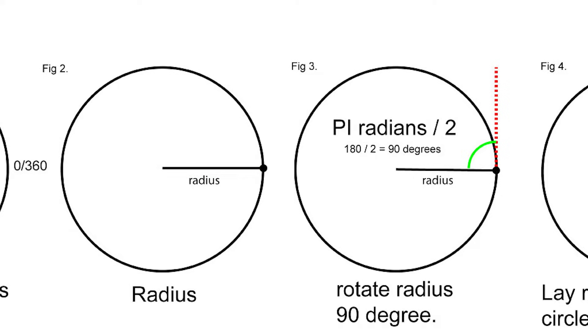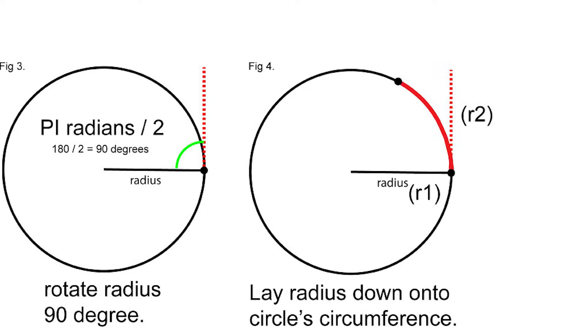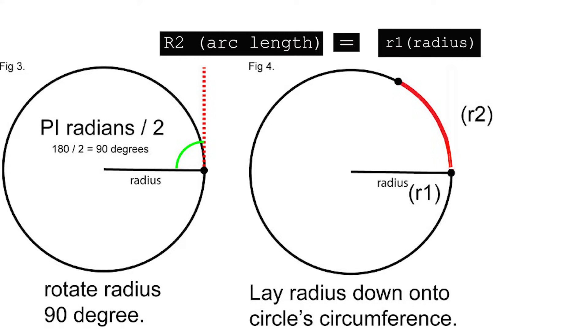And then what we're going to do is take that radius, flip it up on a 90 degree angle, so we rotate it up at 90 degrees. And then we lay that down onto the circumference and then that creates what we call our arc length.